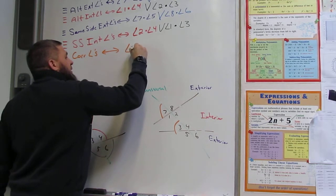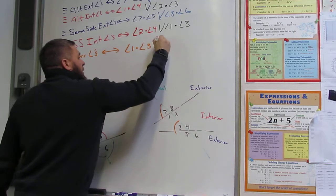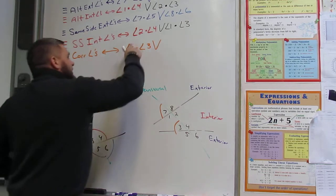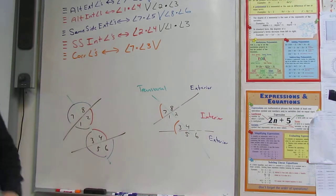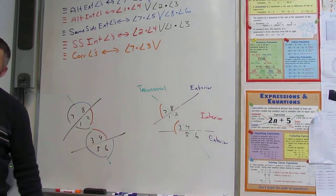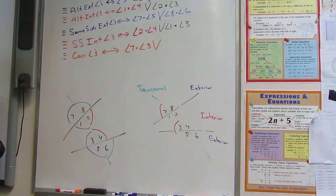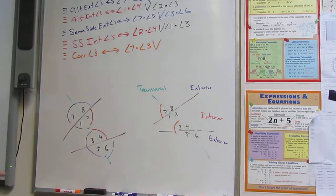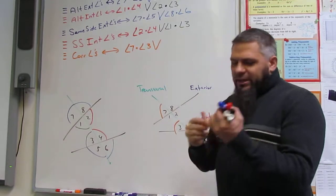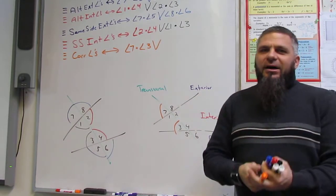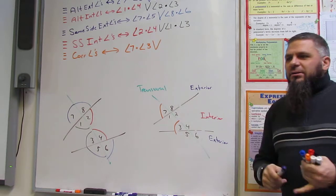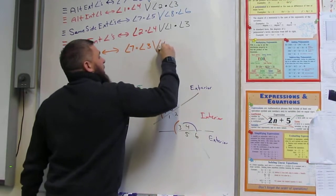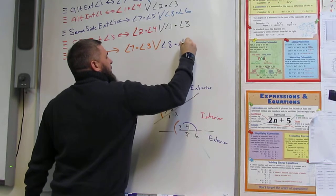So seven and three are corresponding — exterior, interior, same side, non-adjacent. Four was on the opposite side, so that was an alternate. Corresponding means same side and non-adjacent. Can you give me another one? Eight and four. Angle eight and angle four. And another: two and six. Angle two and angle six.